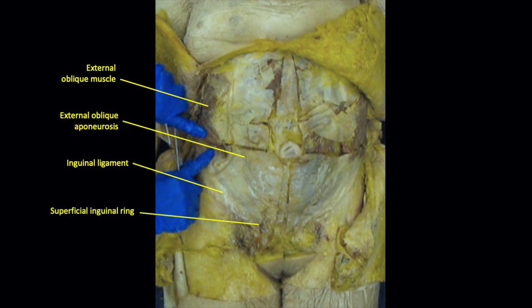Medially and slightly superior to the inguinal ligament, there is a defect in the external oblique aponeurosis, with similar defects in the underlying abdominal wall muscles. These defects form a canal — the inguinal canal — for the spermatic cord in the male and the round ligament of the uterus in females. The opening in the external oblique aponeurosis is referred to as the superficial inguinal ring. The inguinal canal can allow abdominal viscera to extrude through the superficial ring, resulting in an inguinal hernia, which is much more common in men than in women due to the larger canal size.